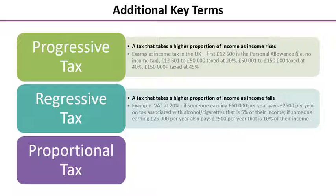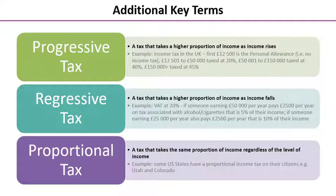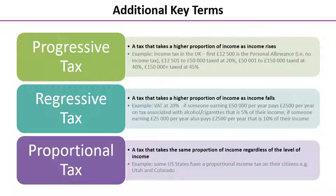Regressive tax is a tax that takes a higher proportion of income as your income falls — a good example being VAT. Finally, a proportional tax takes the same proportion of income regardless of income level. Some US states have a proportional income tax — Utah and Colorado are two examples, and there are around seven or eight US states that do this.